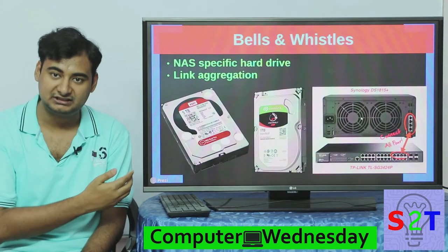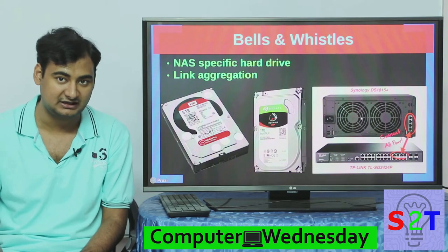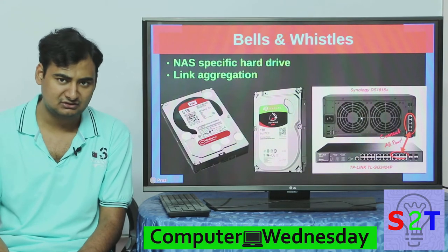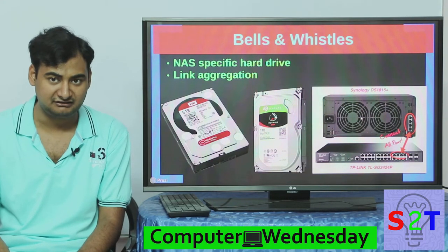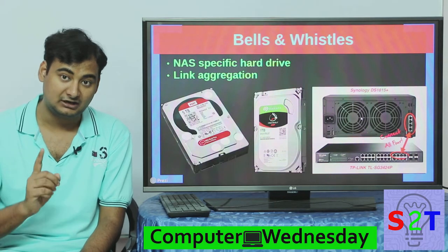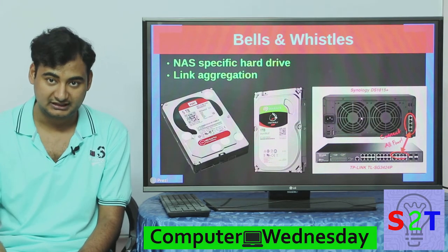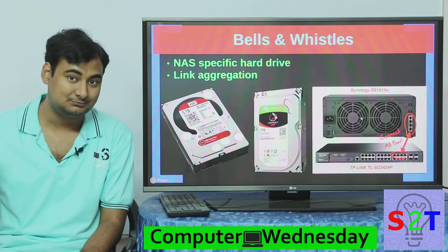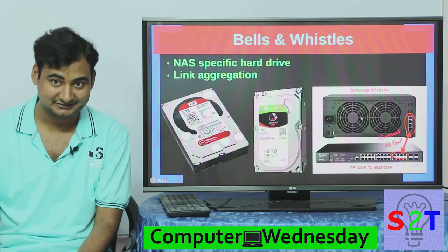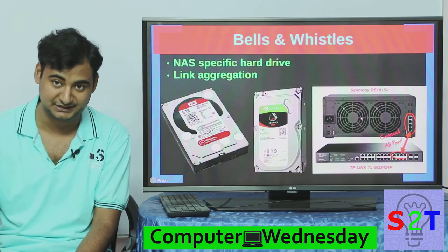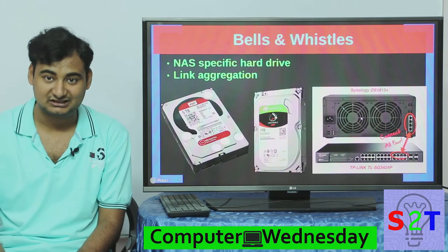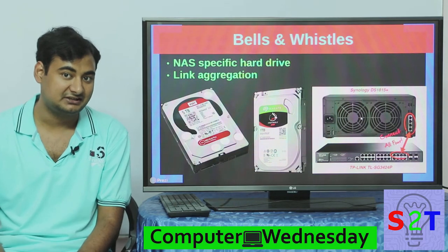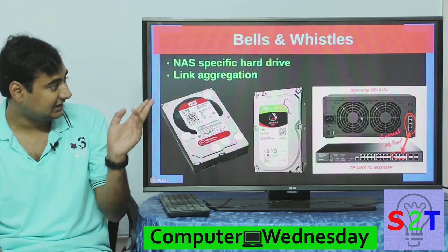If you put cheap, regular desktop hard drives into a NAS enclosure, it won't perform well and the drives will die quickly. Also be mindful: if a hard drive dies in, say, a four-drive RAID system, you can replace it — but you cannot simply pull the remaining three drives out and read them independently. You'd need to go to a data recovery agency. So skimping on hard drives is unwise.